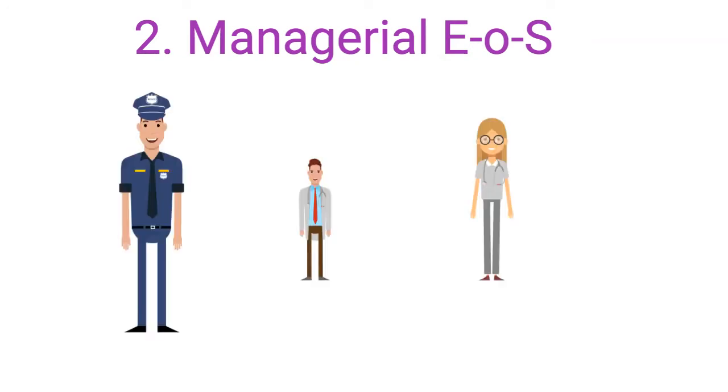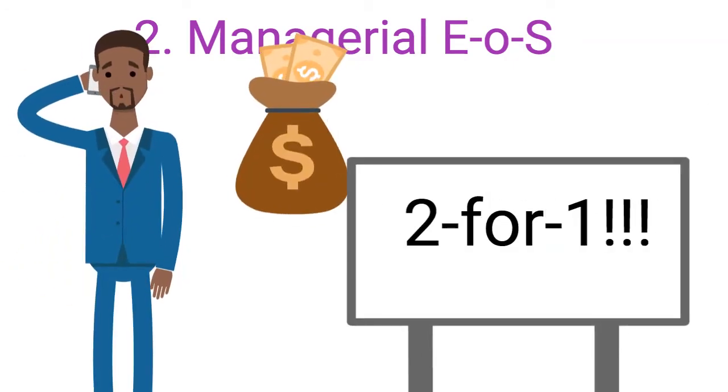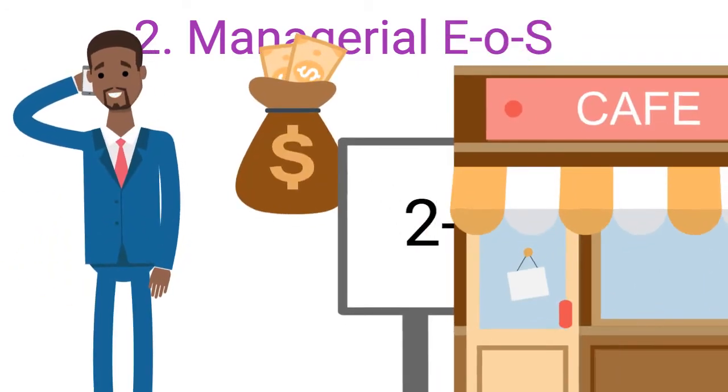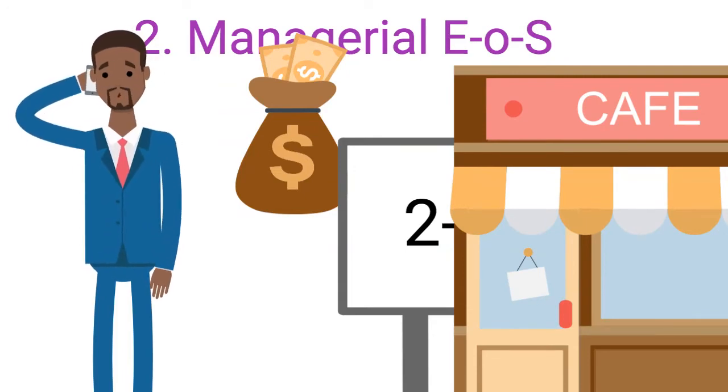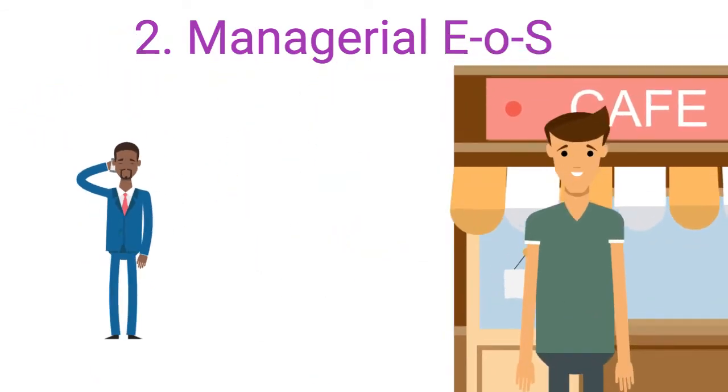Managerial economies of scale. When people specialize into doing a task, they become more productive. A sole trader that has to do the accounting, marketing, and operations of a company will likely be less effective than having an employee working at 100% as an accountant, a marketing specialist, or an operations manager.